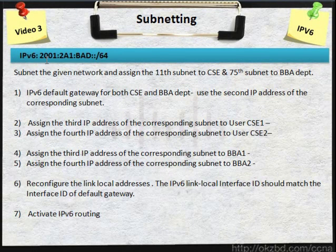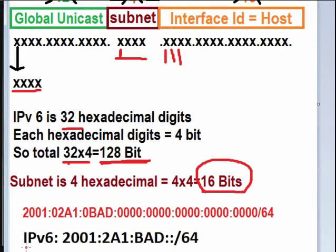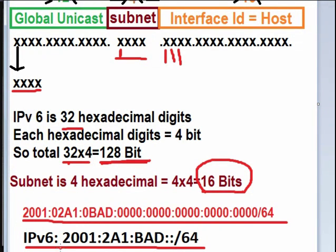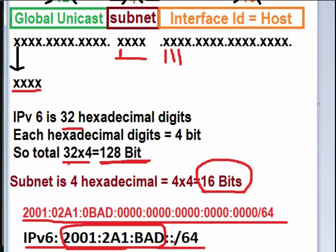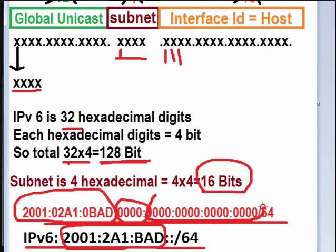Now our IPv6 address is written in a short form. Let's explain it. This is our given IPv6 address. The elaborate form is this one: 2001:2A1B:AD12 — that is the global unicast, 12 hexadecimal. This 12 hexadecimal is global unicast. And double colon means all zeros. In between the colons we have subnet and interface ID. This is the global unicast and subnet, and the rest 16 are the interface ID. Since it is 4 hexadecimal — 0BAD — before there is a 0, so here it is 0BAD.